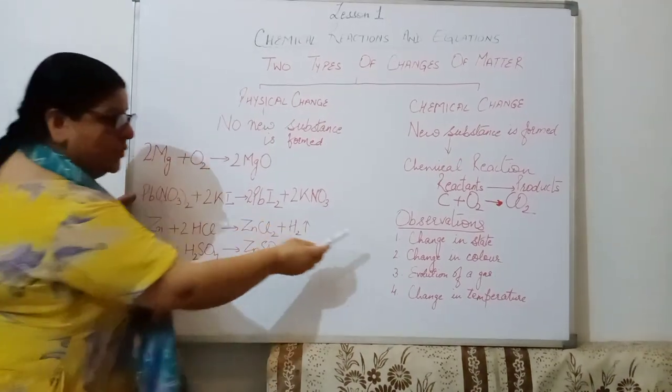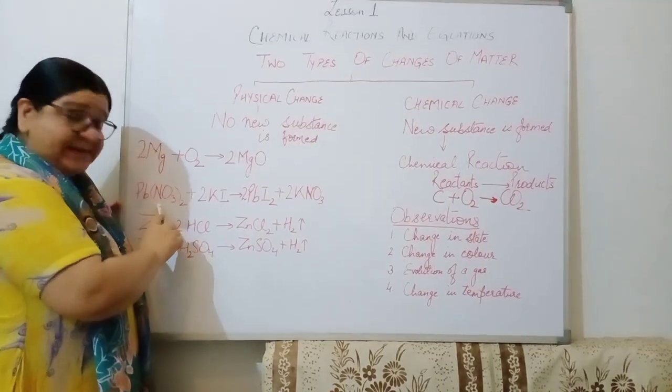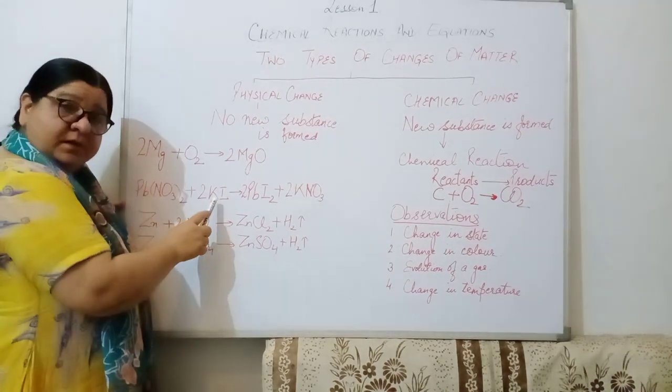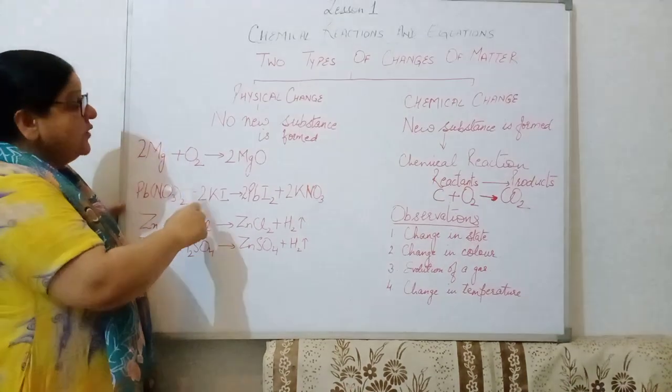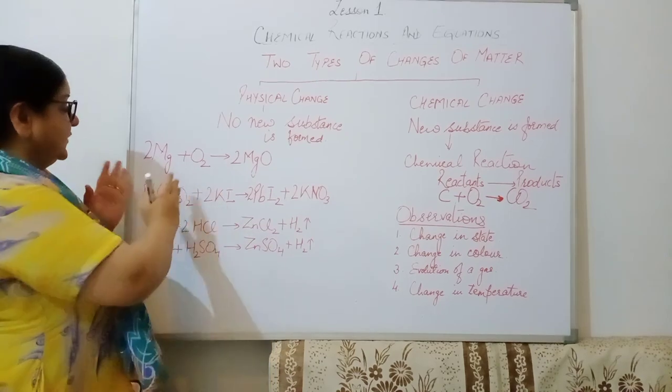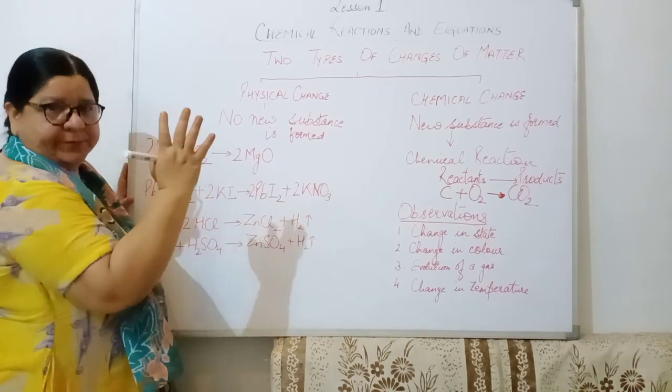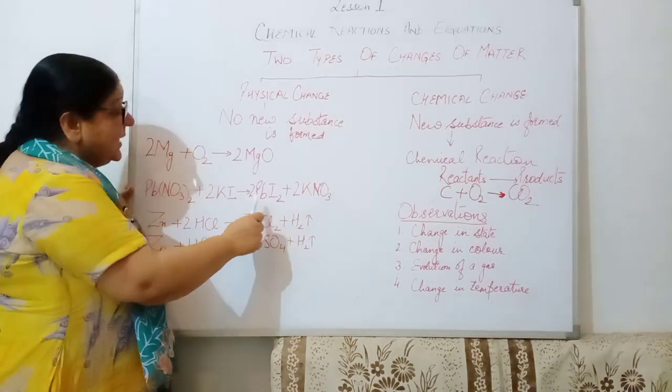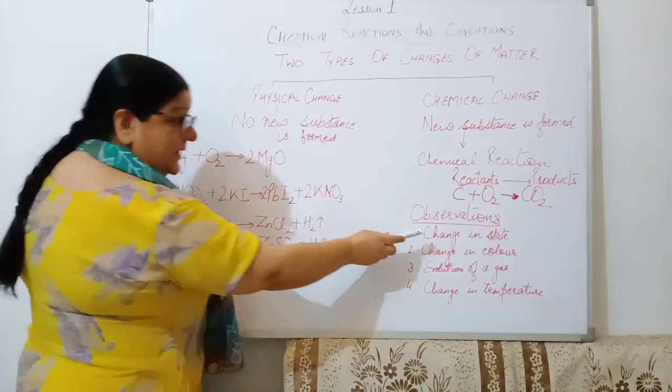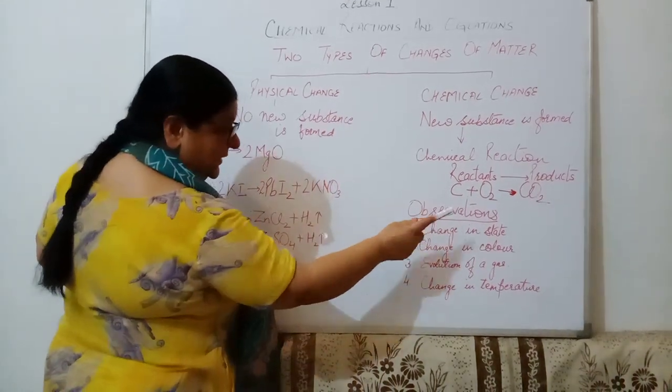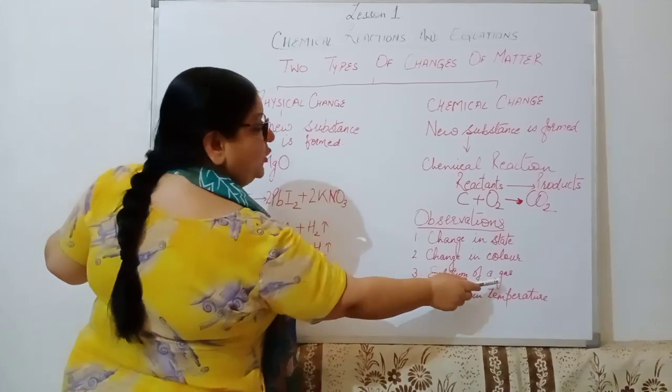Then, if we take the second one that is change in color. Now, if we take lead nitrate which is white in color and we pour potassium iodide in it which is almost transparent in color, we see a tremendous change in color. This was white, this was transparent. It turns into bright yellow color, just the color of my suit. So it changes into yellow color plus this was all in the liquid form. This turns into a precipitate. Here, we say, we can say that we see a change in state also and we see a change in color also.